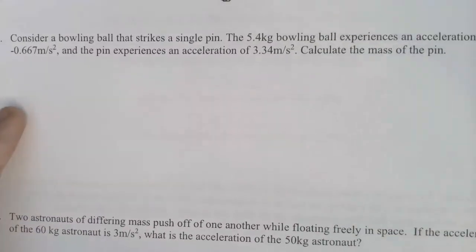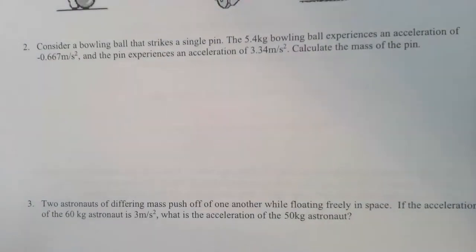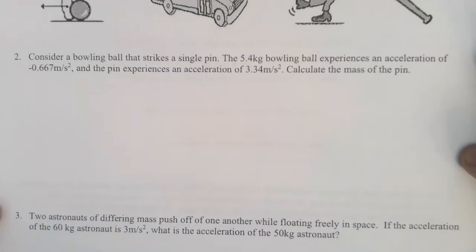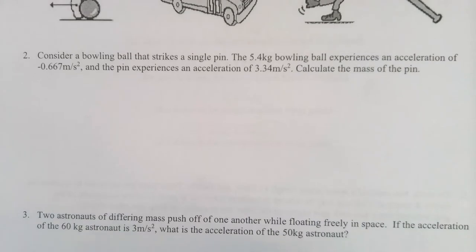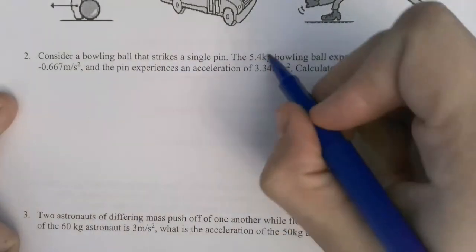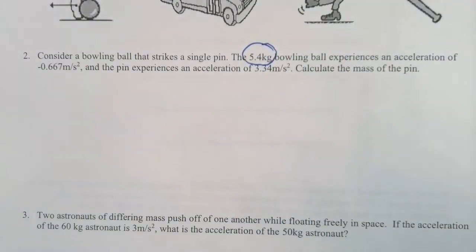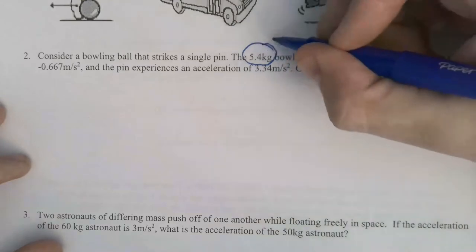We're skipping number one, we'll go straight to number two. Consider a bowling ball that strikes a single pin. The 5.4 kilogram bowling ball experiences an acceleration of negative 0.667 and the pin experiences an acceleration of 3.34. Calculate the mass. So let's annotate. Drop this in the chat. What is that right there? If it's in kilograms, what is it? It's mass. Very good.